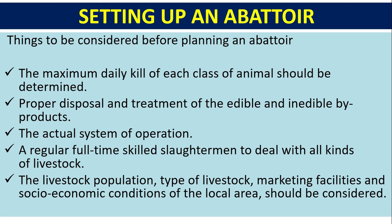When setting up an abattoir, several things must be considered before planning: the maximum daily kill of each class of animal, proper disposal and treatment of edible and inedible byproducts, the actual system of operation, and availability of regular full-time skilled slaughtermen to deal with all kinds of livestock.